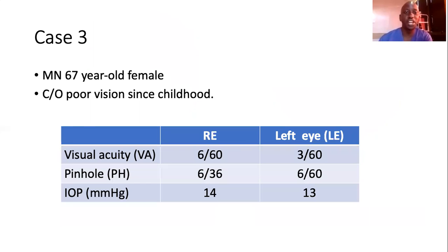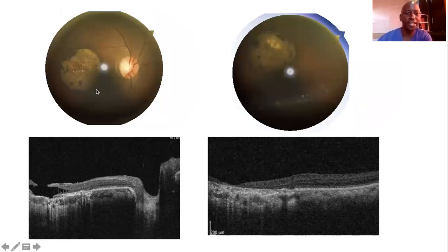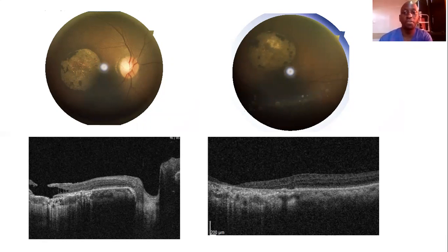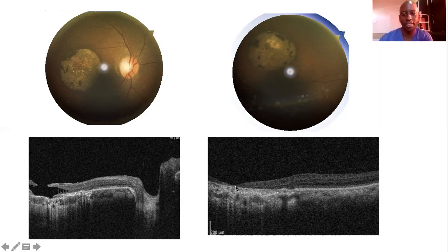Case three is MN, a 67-year-old female who presented with poor vision since childhood, and to this point no diagnosis of Stargardt's had ever been made. Visual acuity was 6/60 in the right eye and 3/60 in the left eye, with the right eye improving only to 6/36 and the left eye not improving at all. Intraocular pressure was 14 and 13. On fundus photo, you see that typical appearance of the macula with severe RPE atrophy in both eyes. The left eye is poorly centered due to very poor fixation. On OCT, you see severe destruction of the retina, almost forming a lamellar macular hole, with complete loss of outer retinal layers, damage to the RPE, and involvement of the inner layers of the choroid. The left eye shows severe foveal and RPE thinning — a more advanced case of Stargardt's disease.